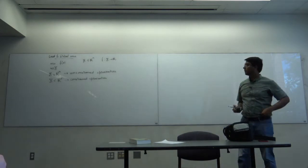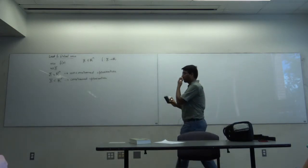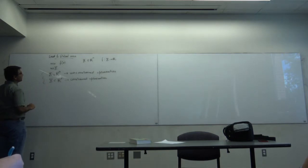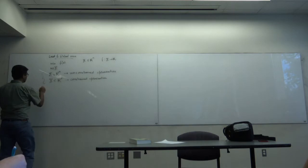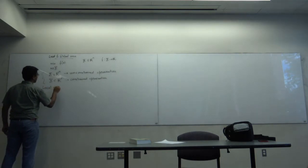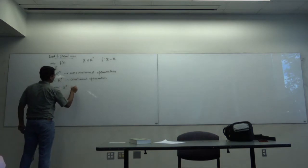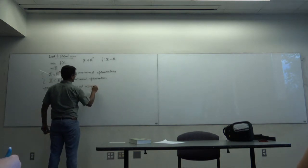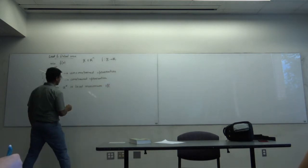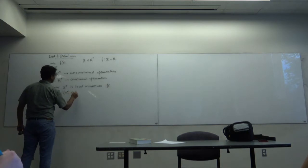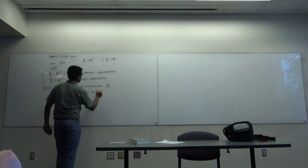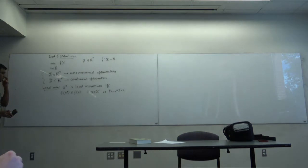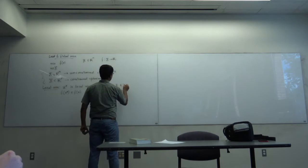The first few weeks we are going to talk about unconstrained optimization. What's a local minimum? x* is a local minimum if and only if f(x*) is less than or equal to f(x) for all x in X such that the norm of x minus x* is less than epsilon, for some epsilon greater than 0.